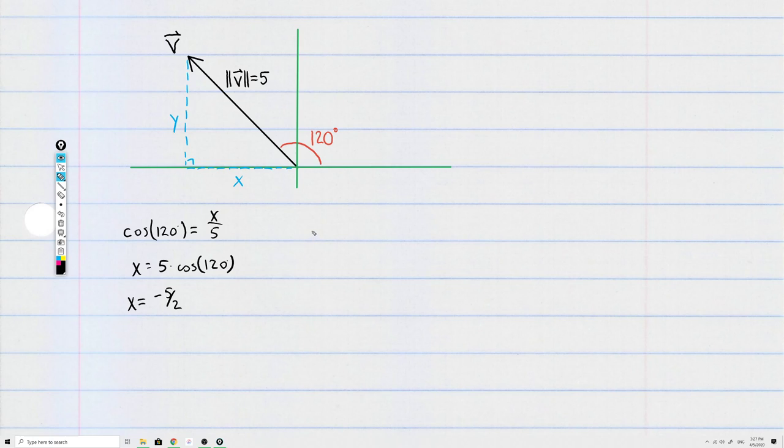Now to find the component y, we do almost exactly the same thing, except the sine function is opposite over hypotenuse. So the sine of 120 is y over 5. Then if you solve for y, you get y equals 5 times the sine of 120.